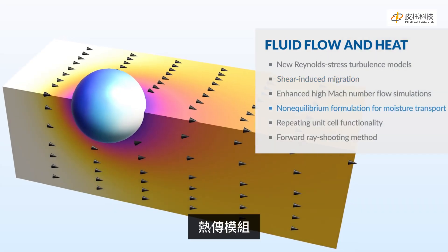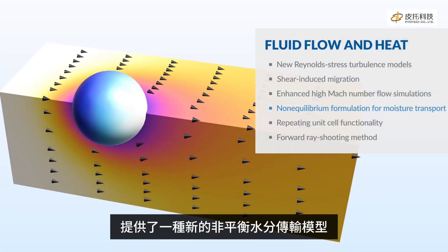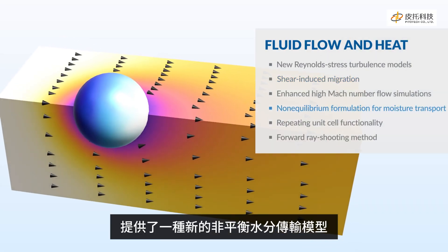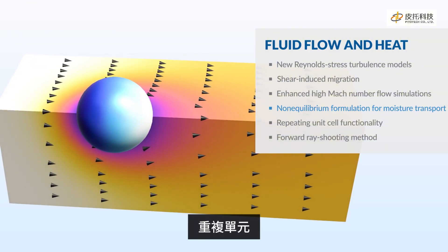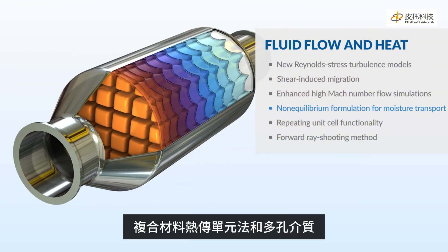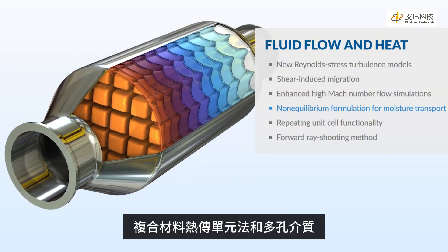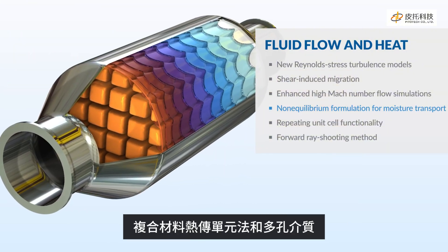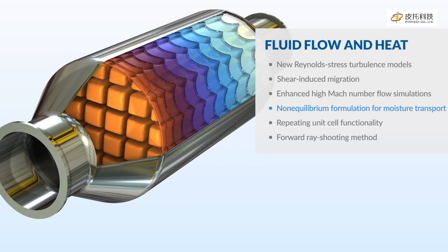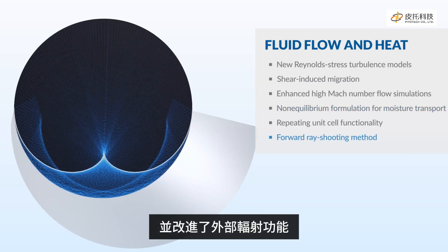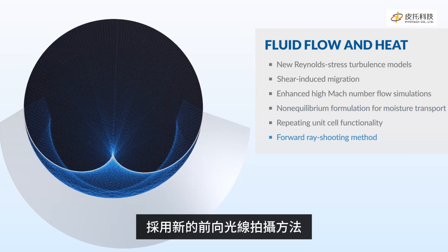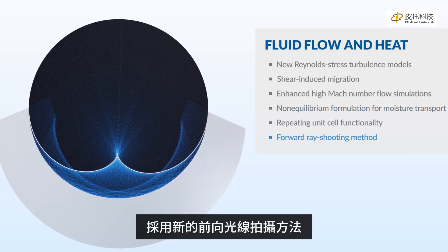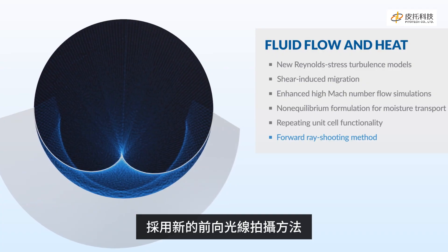The heat transfer module offers a new non-equilibrium moisture transport model, a repeating unit cell method for heat transfer in composites and porous media, and improved external radiation functionality with a new forward ray shooting method.